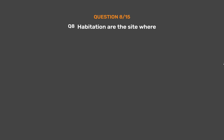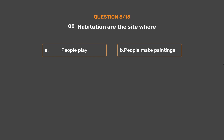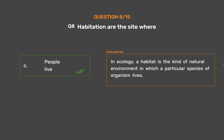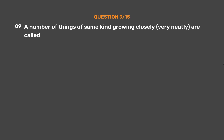Question number eight. Habitation sites are the sites where: Option A - People play, Option B - People make paintings, Option C - People live, Option D - People make stones. The correct answer is Option C: People live. In ecology, a habitat is the kind of natural environment in which a particular species of organism lives.